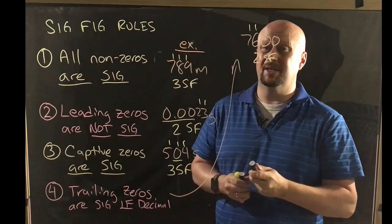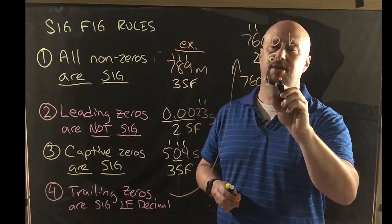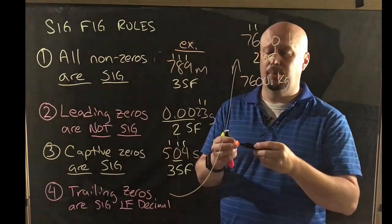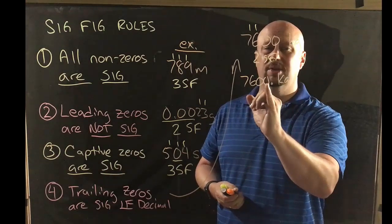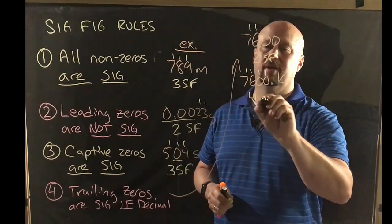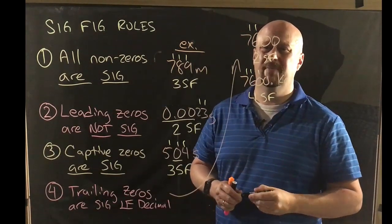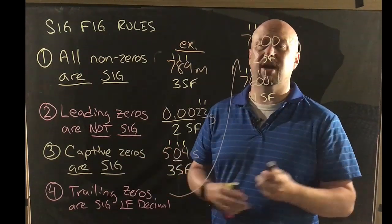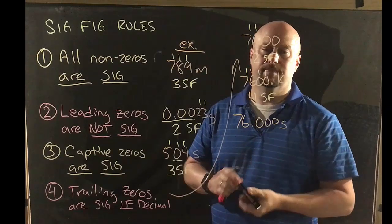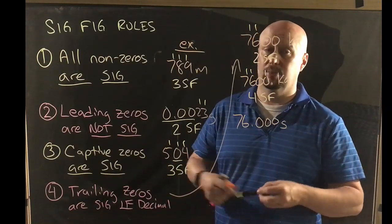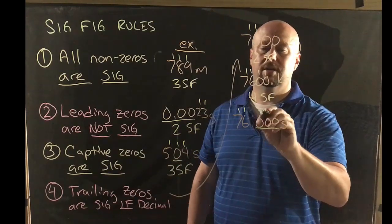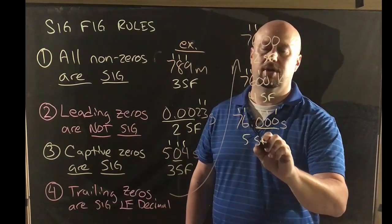But what if the decimal point is given — like 7,600. with a decimal point? That means the measuring device was accurate down to the one kilogram, so all of those zeros do count. That's four significant figures. And what if the zeros are after the decimal — like 76.00 seconds? That would mean I measured down to the milliseconds, which is entirely plausible. Because the decimal is given, those trailing zeros are obviously significant — all four figures are significant.